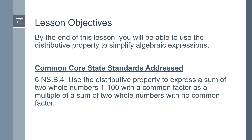By the end of today's lesson, you will be able to use the distributive property to simplify algebraic expressions. The Common Core State Standard today is to use the distributive property to express a sum of two whole numbers between 1 and 100 with a common factor as a multiple of a sum of two whole numbers with no common factor.